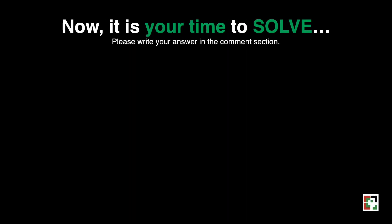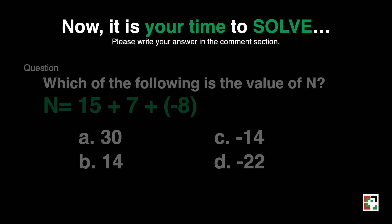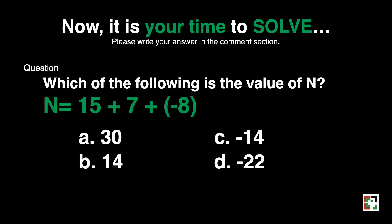Now it is your turn to solve. Please write your answer in the comment section. The question is: which of the following is the value of n? n is equal to 15 plus 7 plus negative 8. Is it a) 30, b) 14, c) negative 14, or d) negative 22? I'll be waiting for your answer.